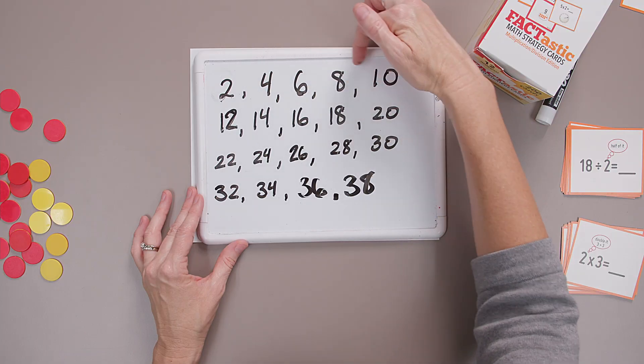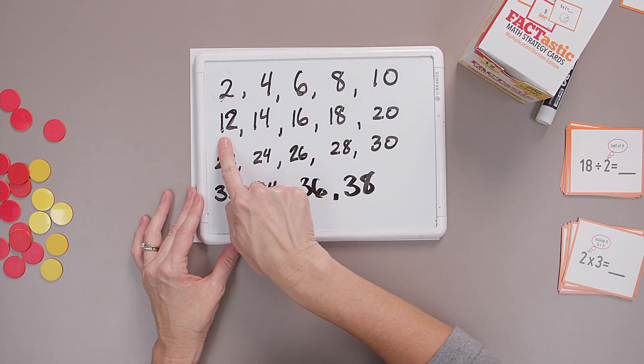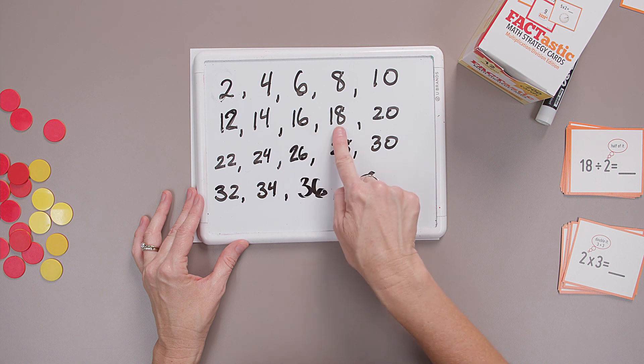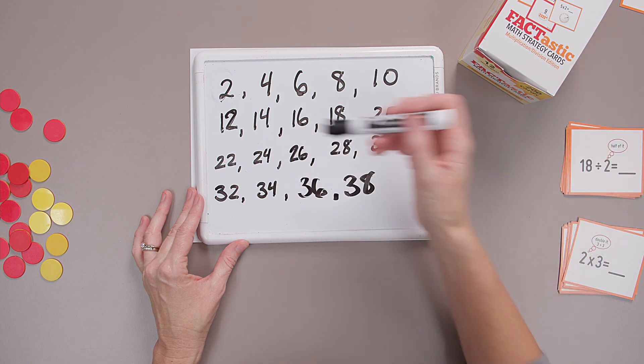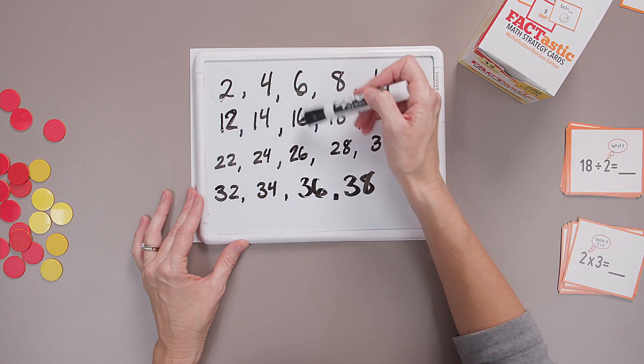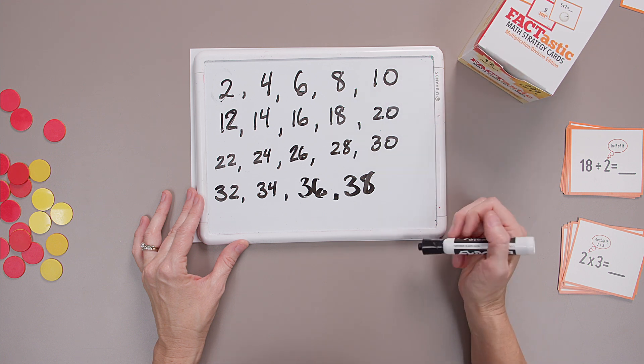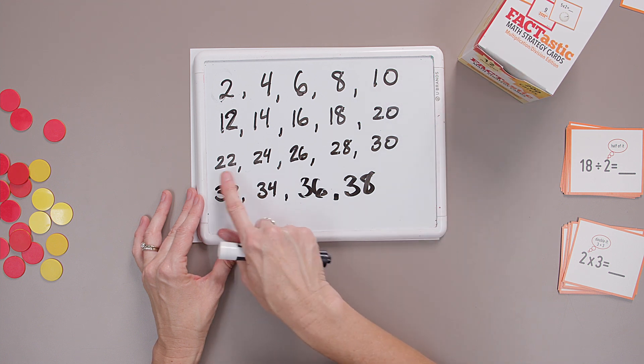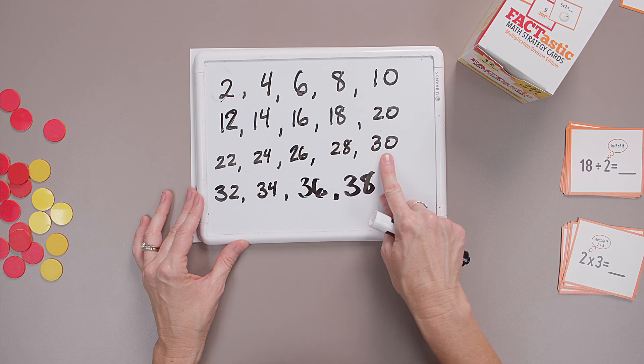Two, four, six, eight, ten. Twelve, fourteen, sixteen, eighteen, twenty. I'm seeing some patterns here. Some numbers that continue to reoccur. Twenty-two, twenty-four, twenty-six, twenty-eight, thirty.